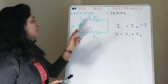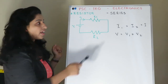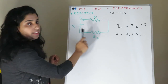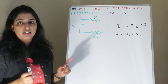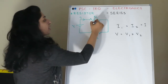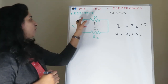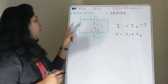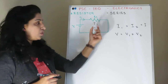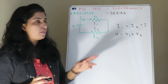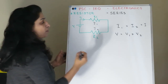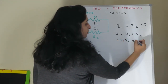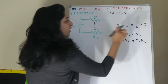Resistors in series: if you have two resistors R1 and R2 connected in series with voltage supply V, the current flowing through them is the same — I1 equals I2 equals I. The voltage across each resistor is V1 and V2 respectively, and the total voltage is V1 plus V2.